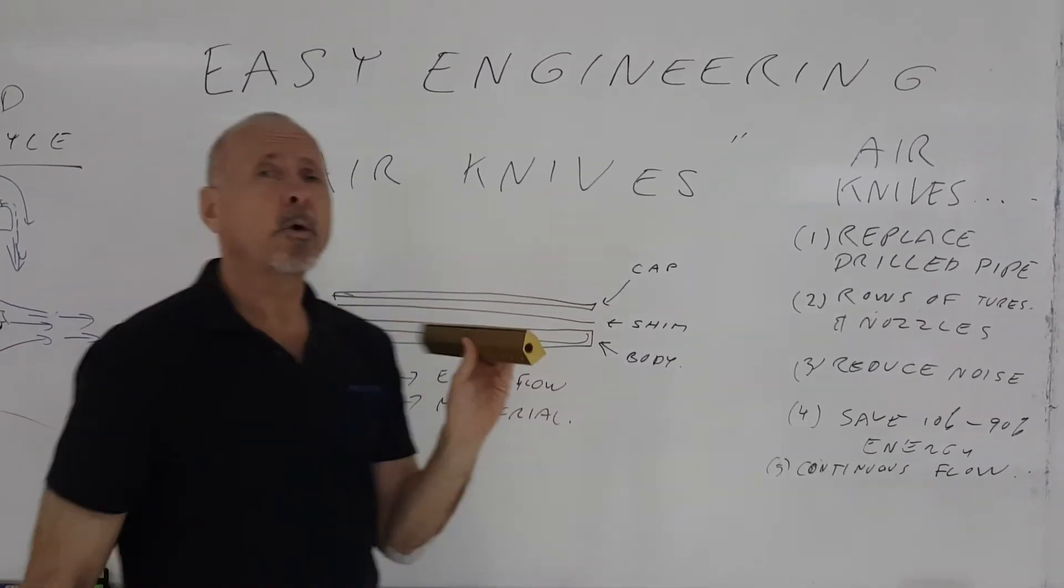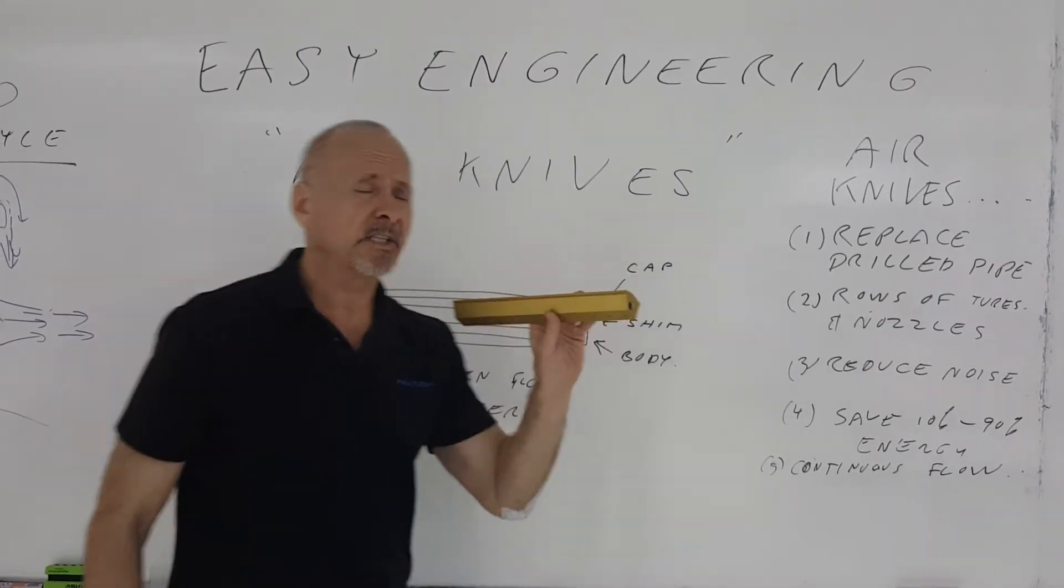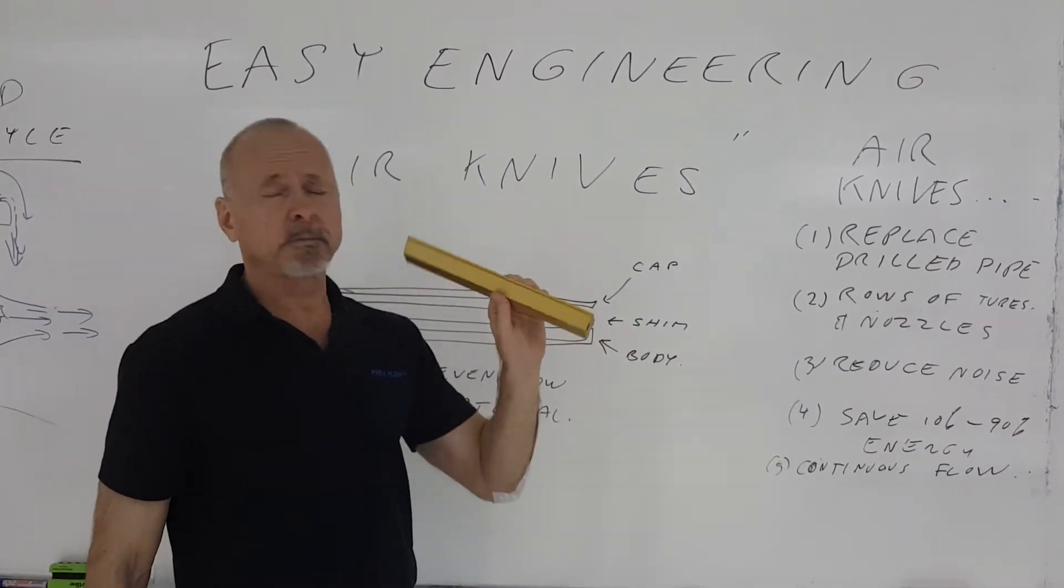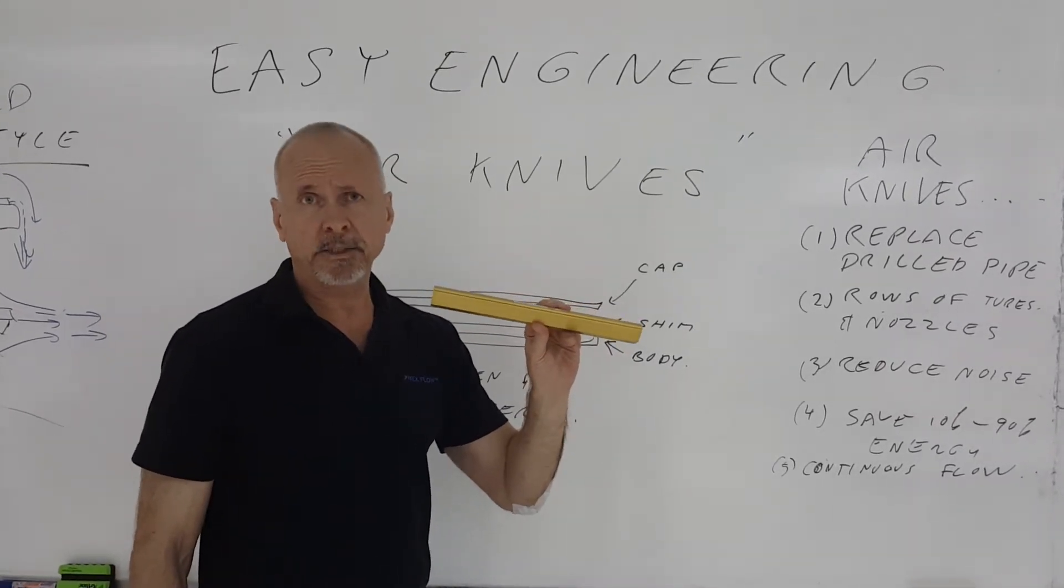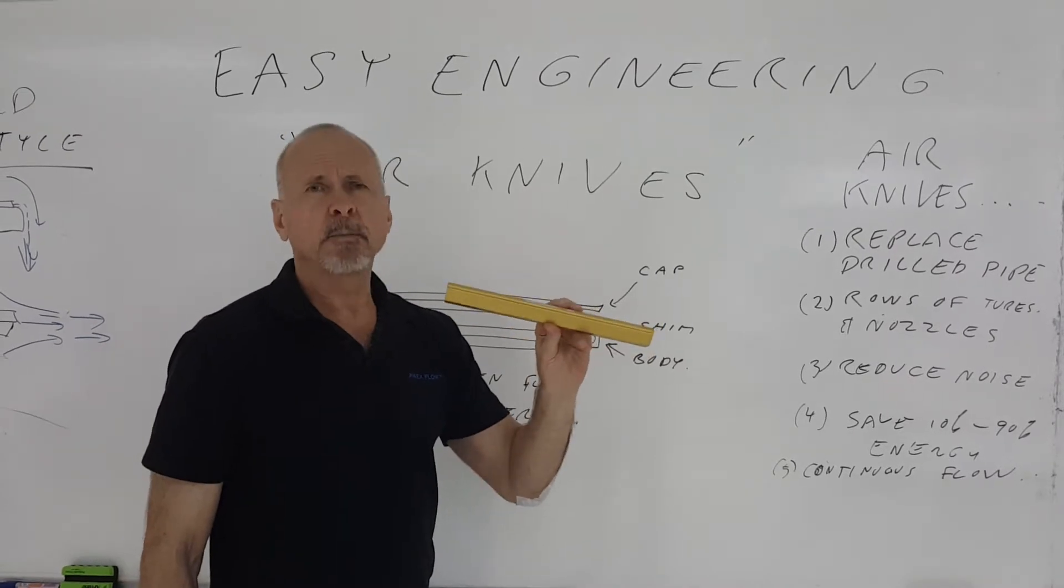Material is very important in making an air knife. Most air knives are manufactured in aluminum. They also make them in stainless steel for high temperature and food and pharmaceutical applications. But most of them are made in aluminum.